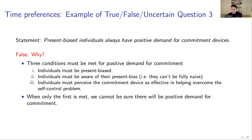Note that a person might perceive the device as effective even when it's not, due to partial naivete. When only the first condition is met — the person is just present biased — we cannot be sure there will be positive demand for commitment. The statement uses 'always,' so you can easily find counterexamples showing it is false. Without 'always,' the answer might be uncertain.